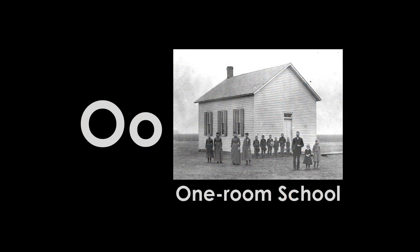O is for one-room schools. At one time, most students in Kansas attended a one-room school, like the one in this picture. Students sat in the same room with their younger and older brothers, sisters, and friends. One teacher taught everyone. A wood stove kept the school warm and was used to heat the lunches that students brought from home. As each grade recited their lessons in the front of the schoolroom, the other students worked on their lessons at their desks.